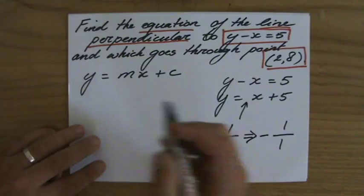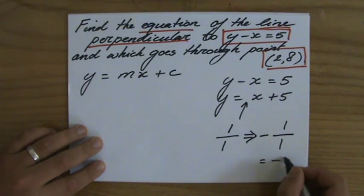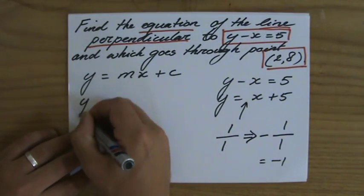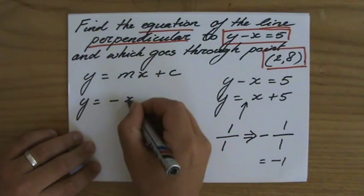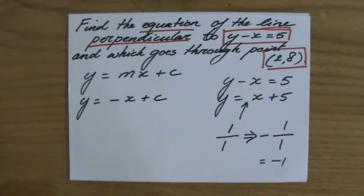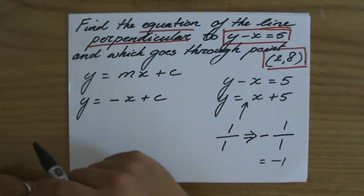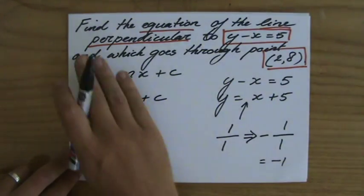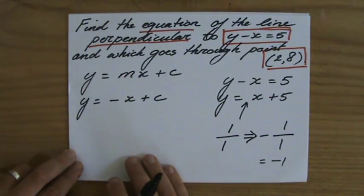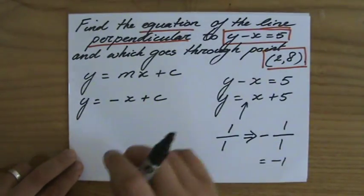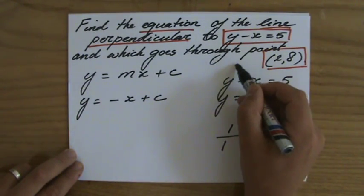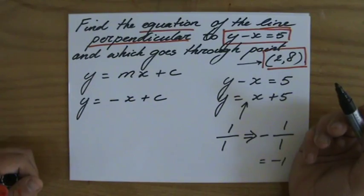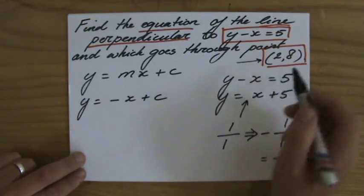All I gotta do now, we've done that many times already, is to find that y-intercept. Now sometimes they give me the y-intercept in the question, they don't now. However, they tell me it has to go through point (2,8), so when y is 8 then x is 2.